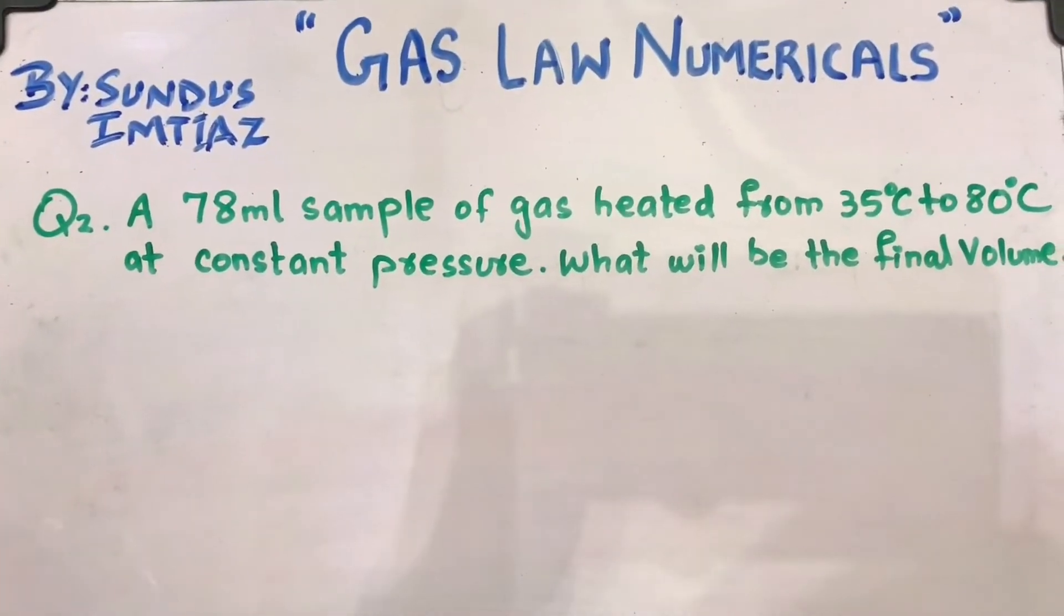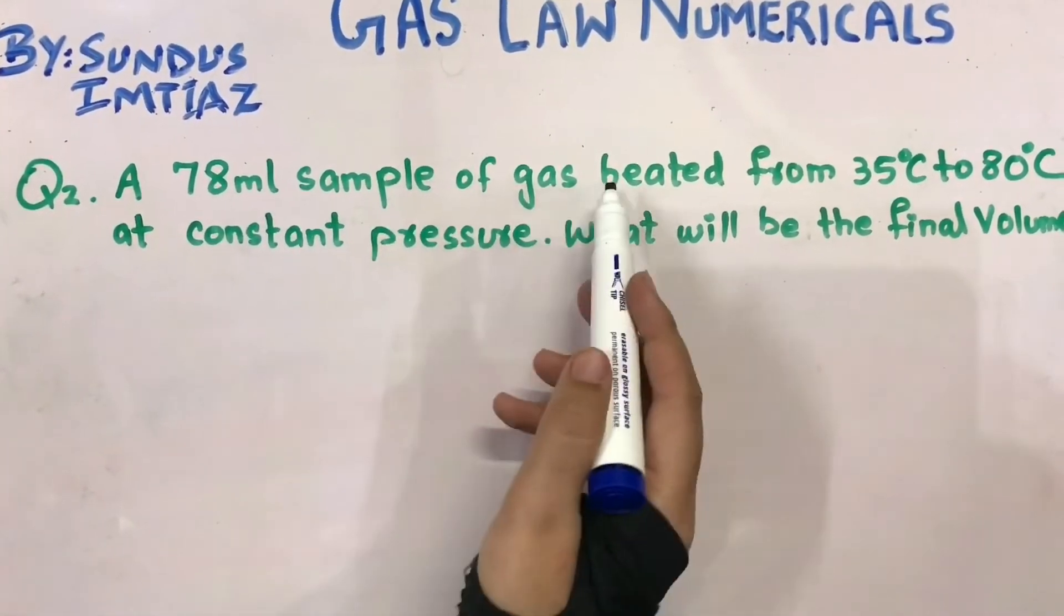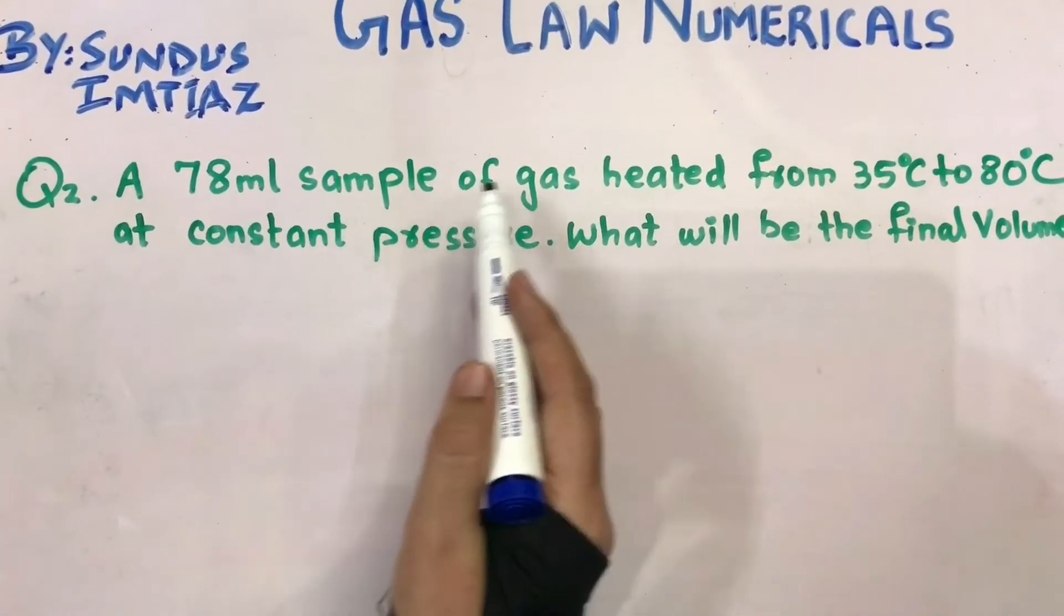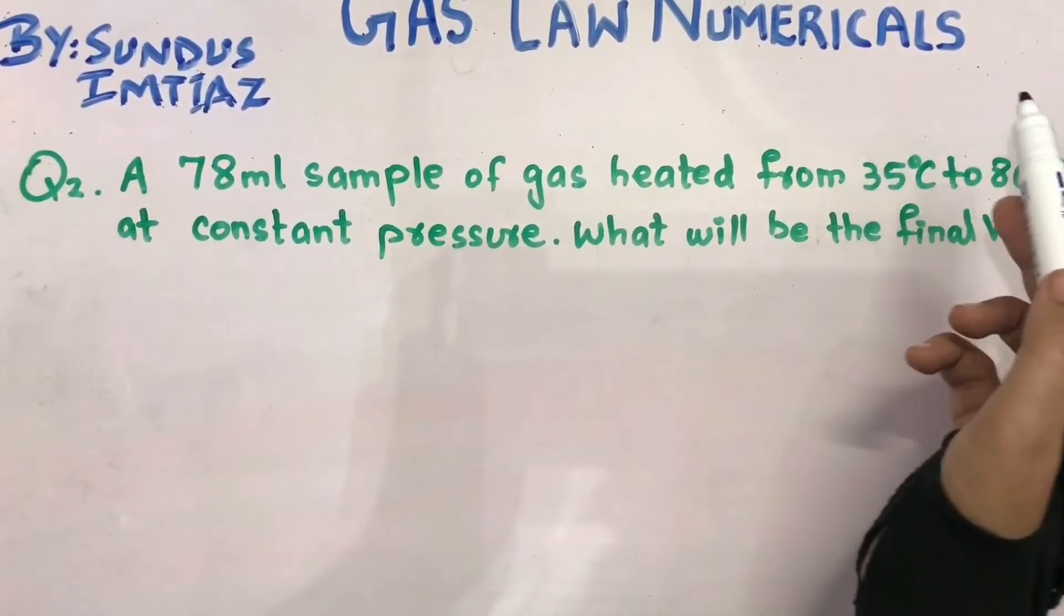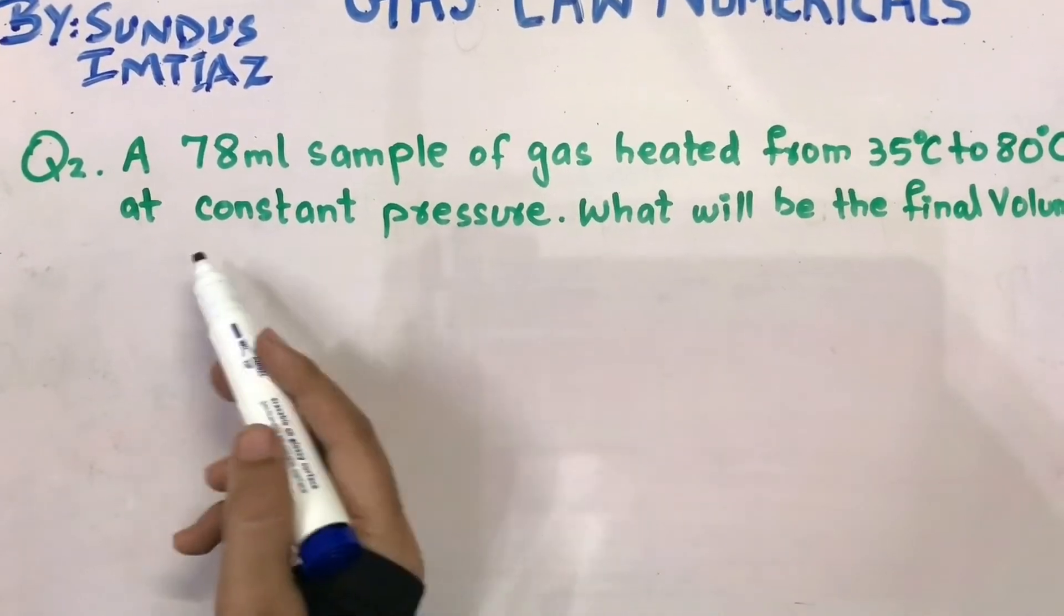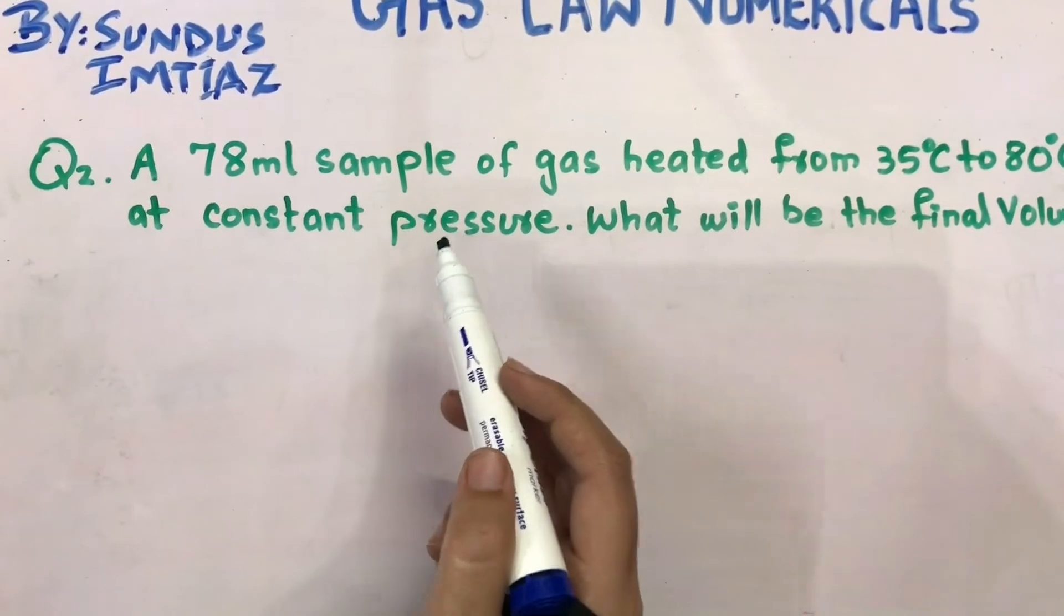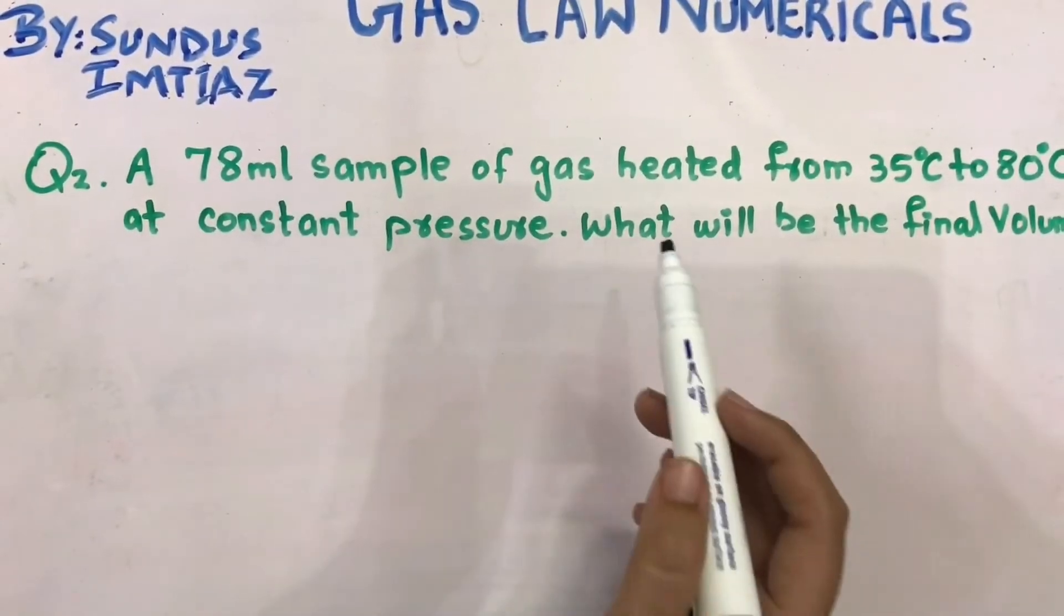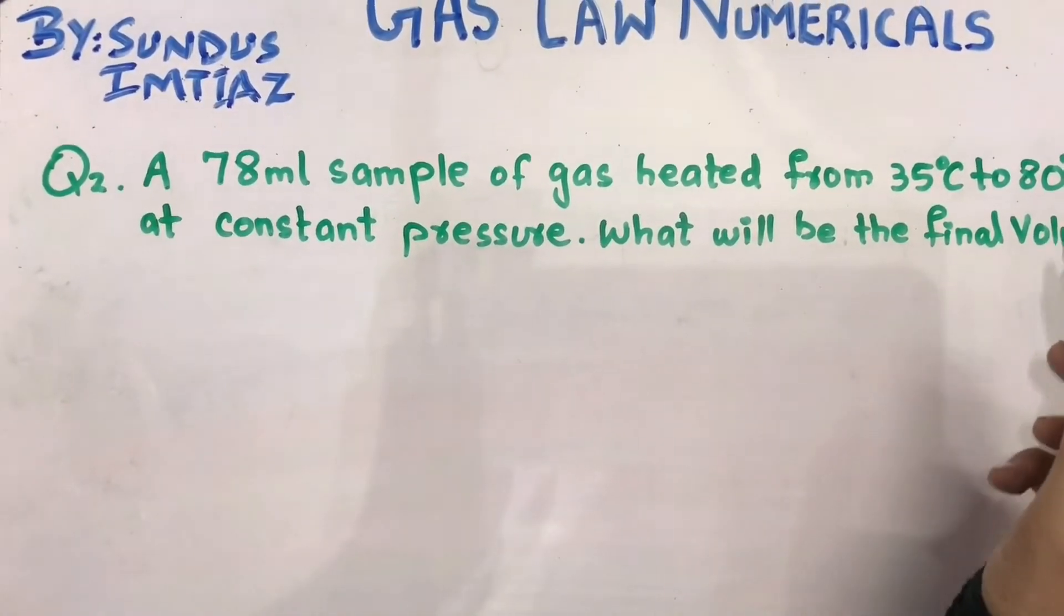This is question number 2, which says a 78 ml sample of gas heated from 35 degree centigrade to 80 degree centigrade. This is our initial temperature and this is our final temperature. At constant pressure, according to Charles's Law the pressure is constant. What will be the final volume? You have to find V2, the final volume.